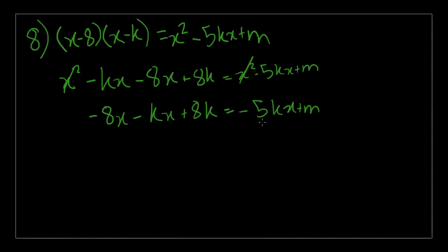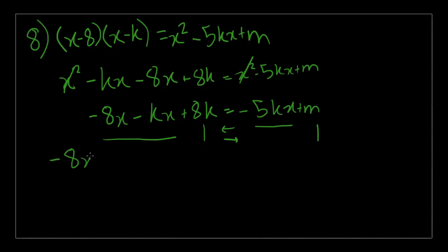Since we have x squared on both sides, we can cancel those out. Now our equation looks like negative 8x minus kx plus 8k is equal to minus 5kx plus m. What we need to realize is that this equation is true for all values of x. That means the terms on the left-hand side which have an x in them should equal the terms on the right-hand side with an x. Since k and m are constants, those never change.